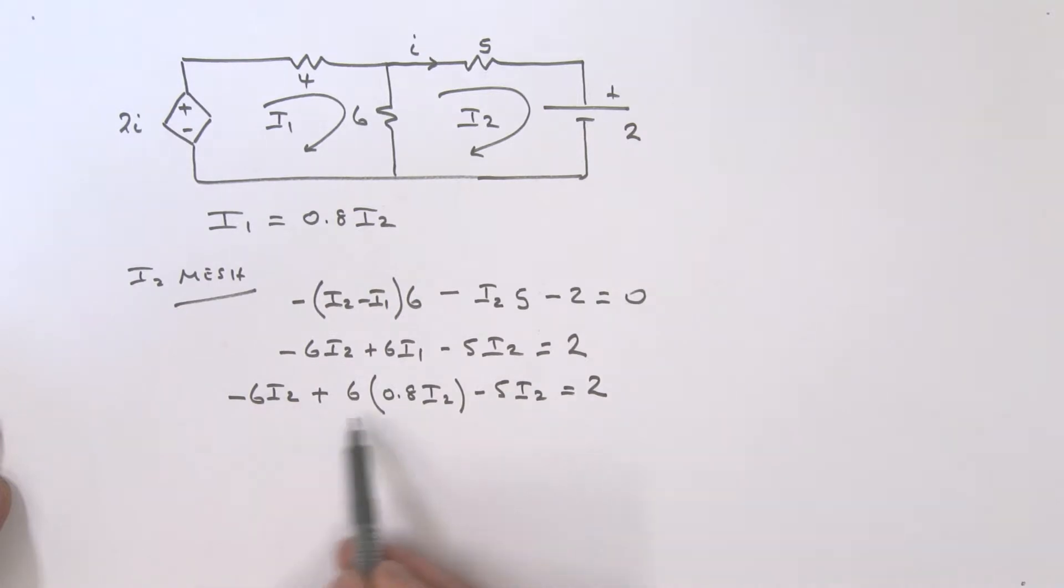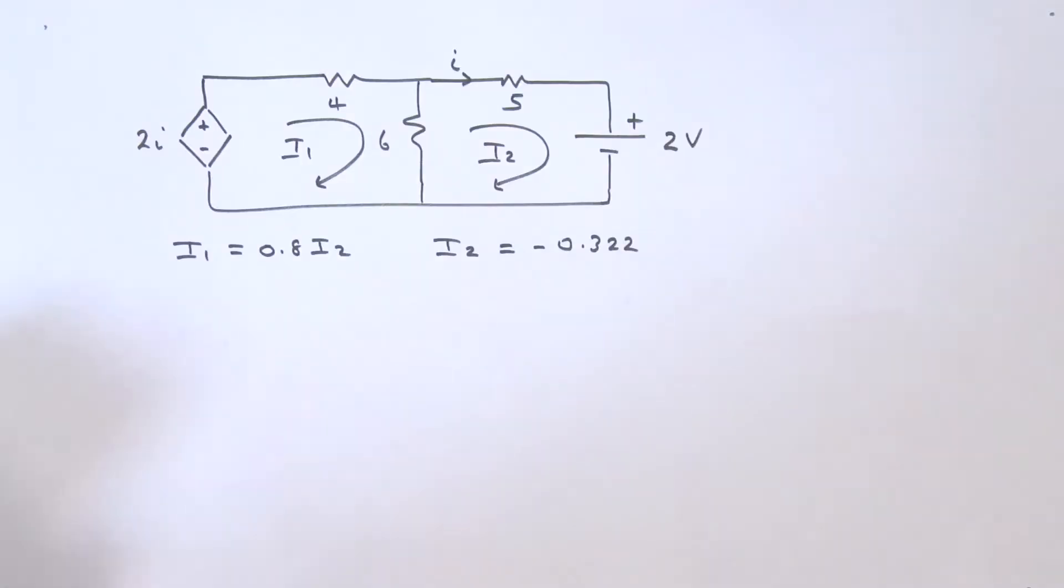If I work this out in terms of how many I2s I've got, I have actually a minus 6.2 I2s, and that is equal to 2. So I can find I2 now. I2 is really equal to 2 divided with a minus, divided by that 6.2, and that is equal to minus 0.322, with a bit of rounding there.